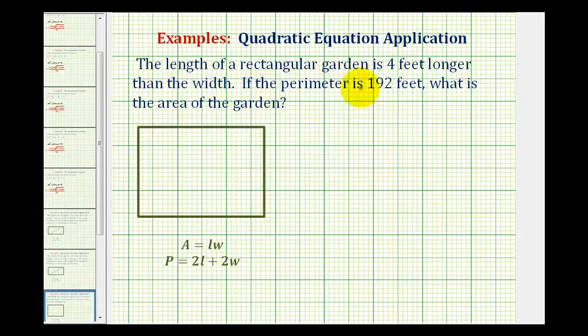The length of a rectangular garden is four feet longer than the width. If the perimeter is 192 feet, what is the area of the garden?